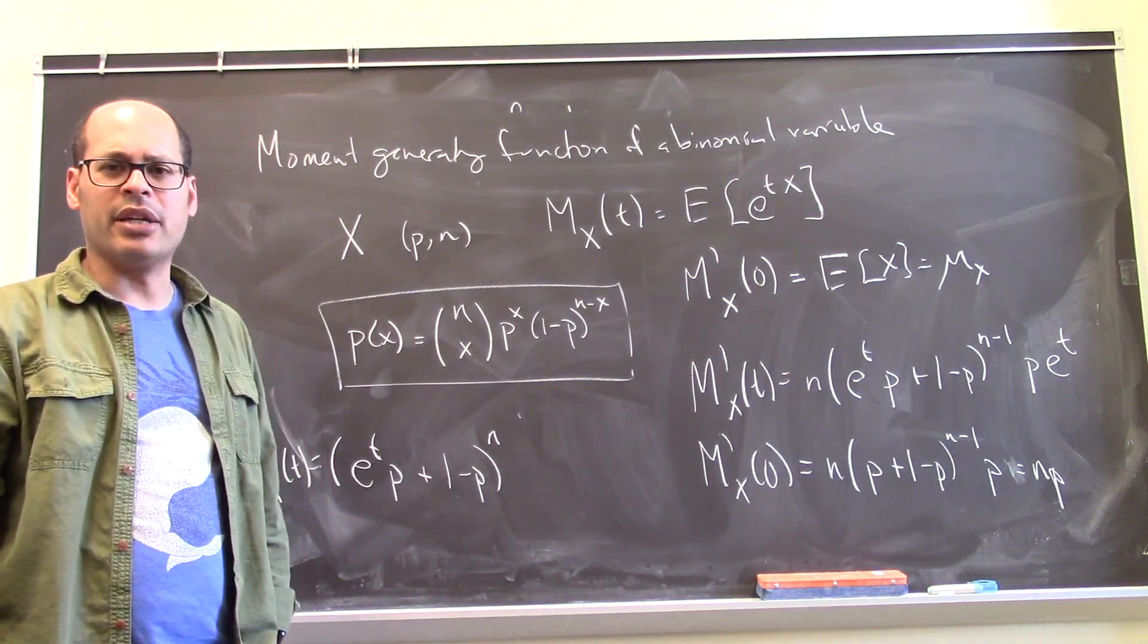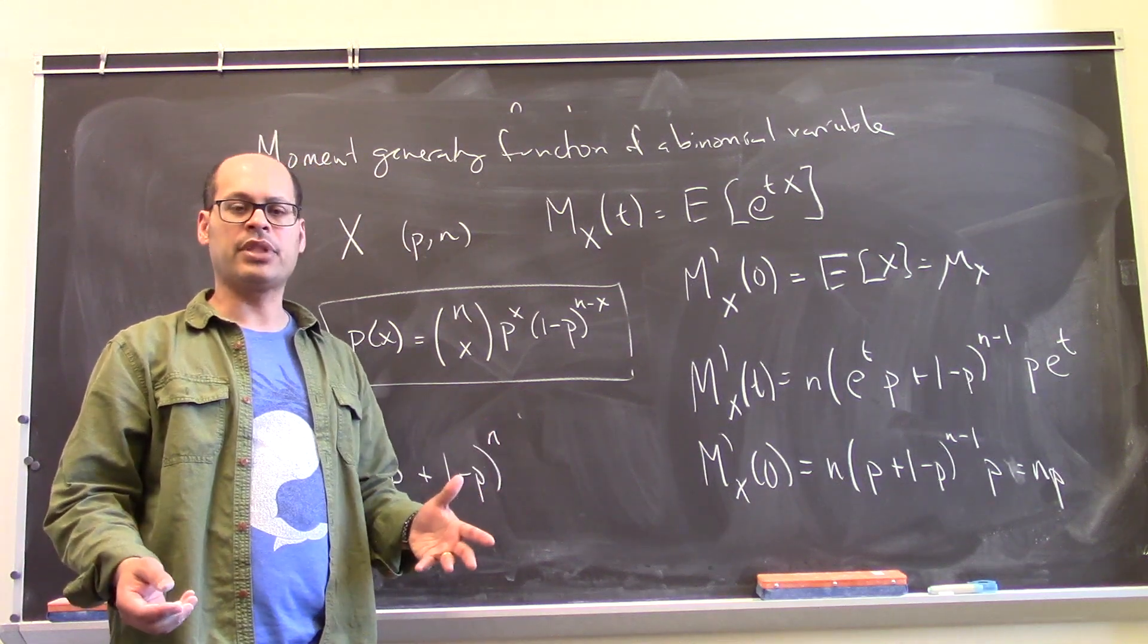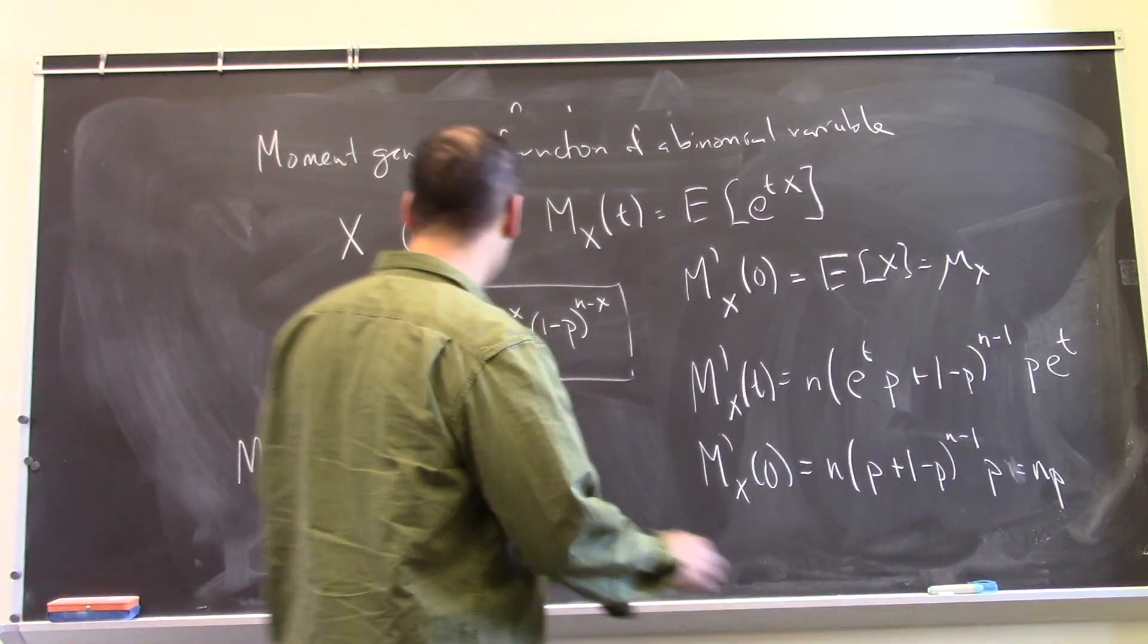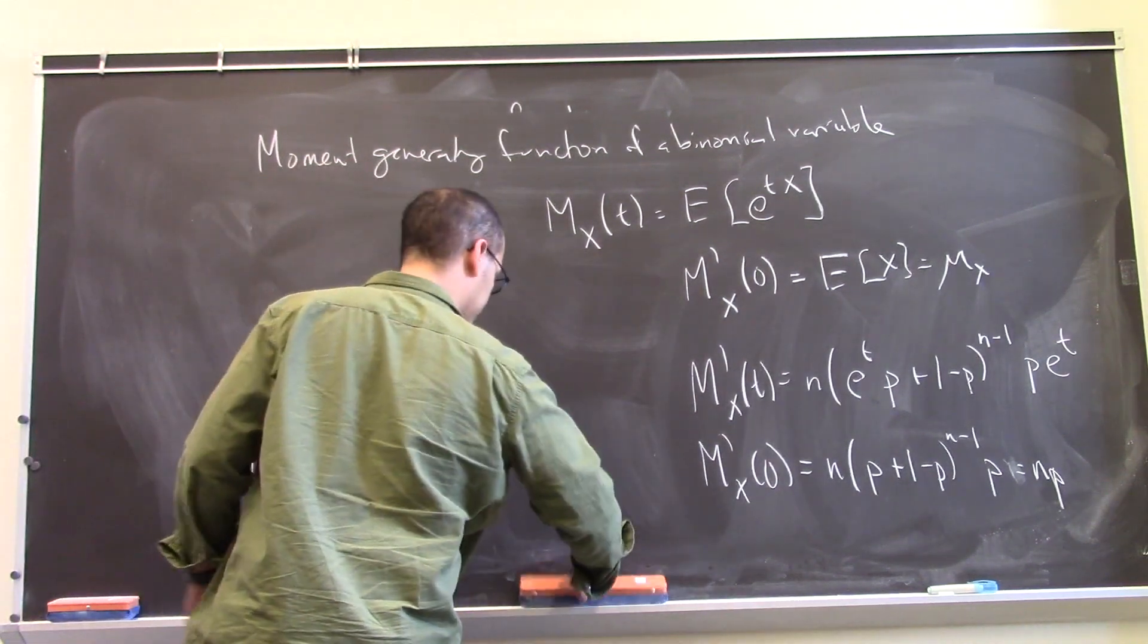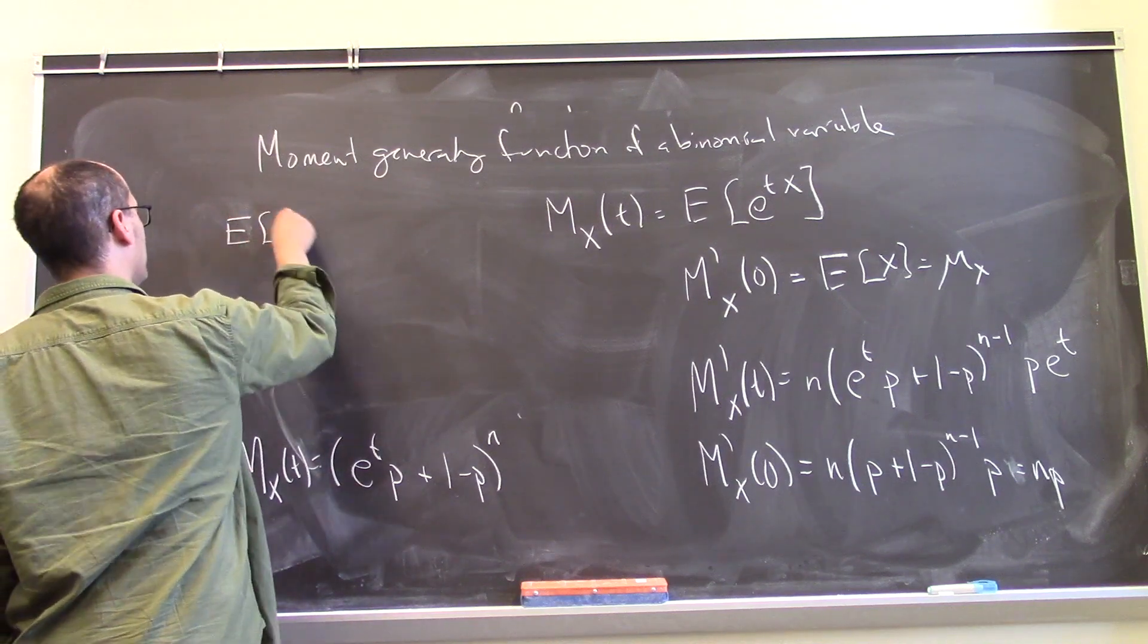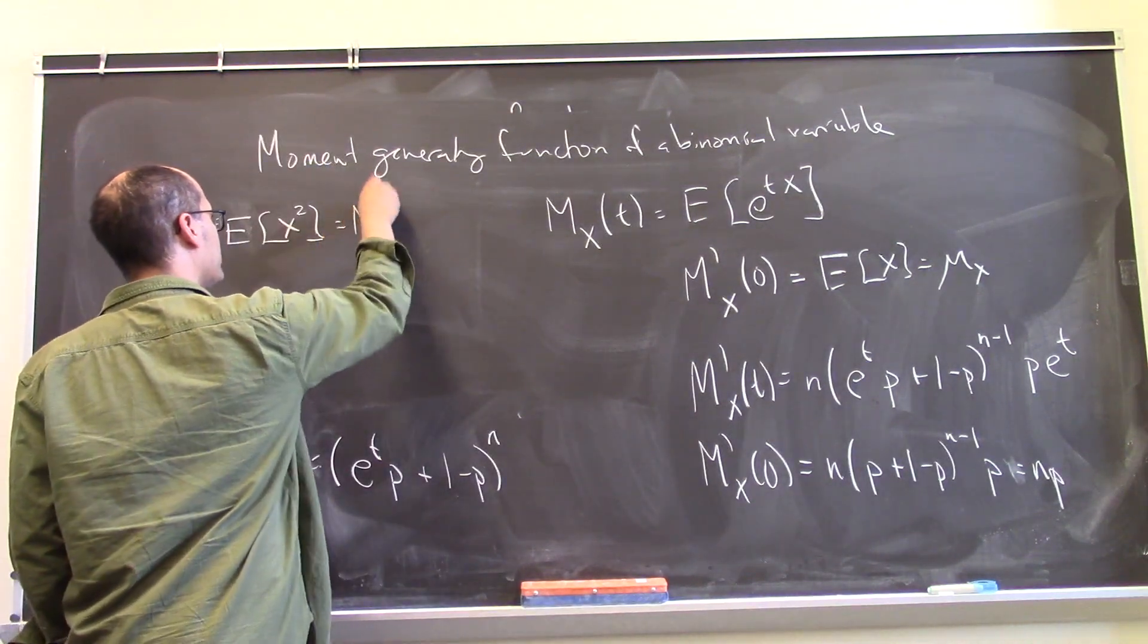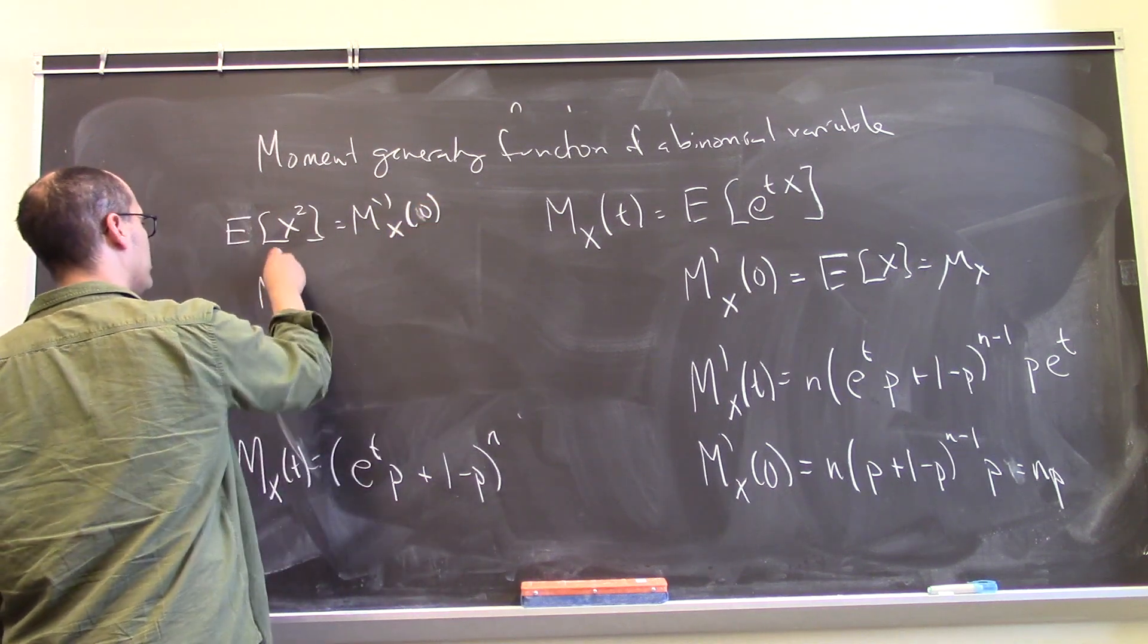Of course, this was not a hard thing to know. If you have a p probability of success each time and you do it n times, how many successes do you expect? np. We knew that, right? But now we know it again. And let's look at the variance. So to do that, I'm going to look at the expected value of X squared. So the expected value of X squared is going to be the second derivative plugged in 0. So let's take the second derivative.